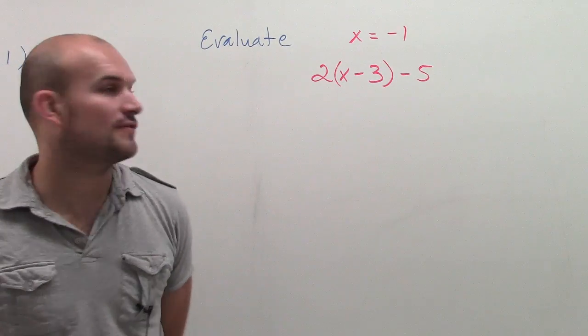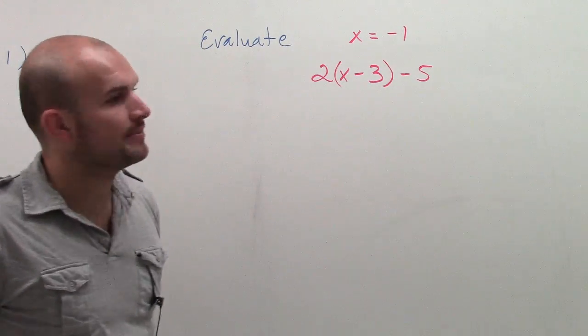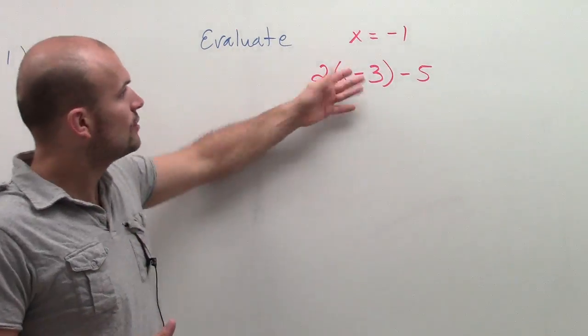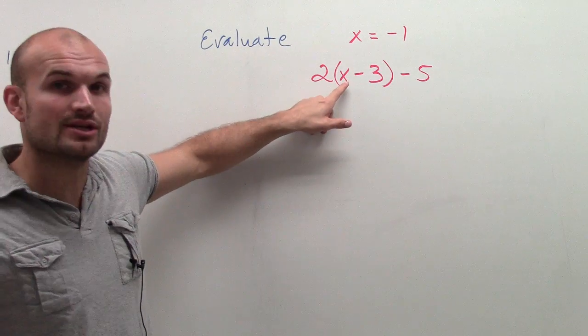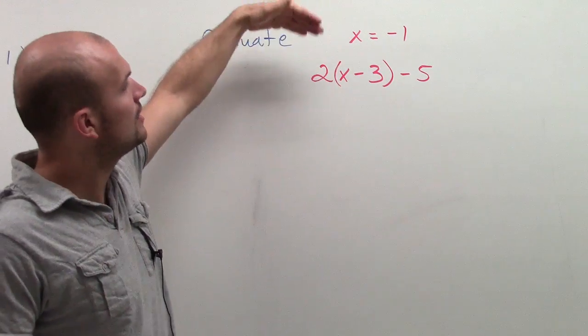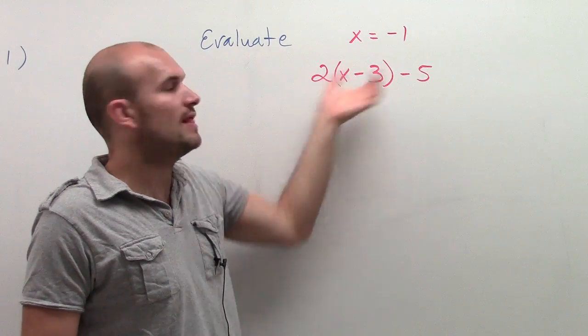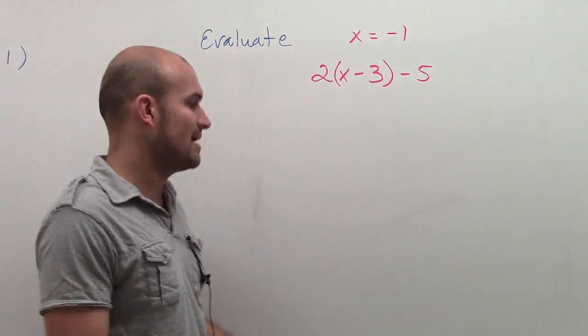It's really important for us to understand that if I wanted to translate this, we need to make sure we understand that when we don't have our variable, we didn't know the value of this, so it would be 2 multiplied by the difference of a number minus 3, and then all of that is being subtracted by 5.